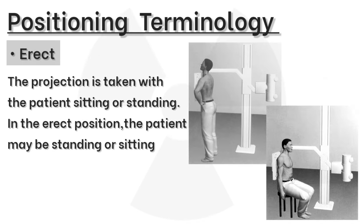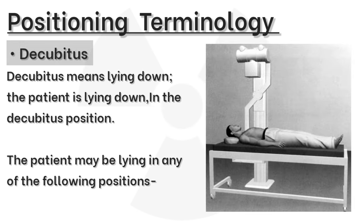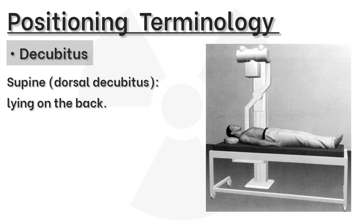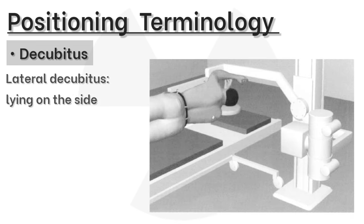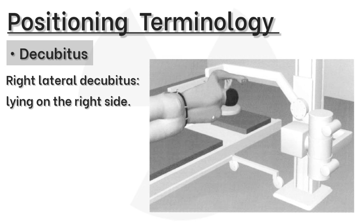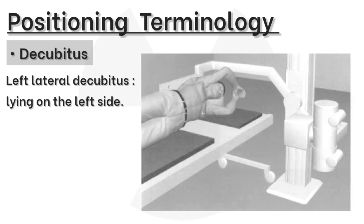Positioning terminology. Erect: the projection is taken with the patient sitting or standing. Decubitus means lying down; the patient may be lying in any of the following positions. Supine, or dorsal decubitus: lying on the back. Prone, or ventral decubitus: lying face down. Lateral decubitus: lying on the side — right lateral decubitus is lying on the right side, and left lateral decubitus is lying on the left side.